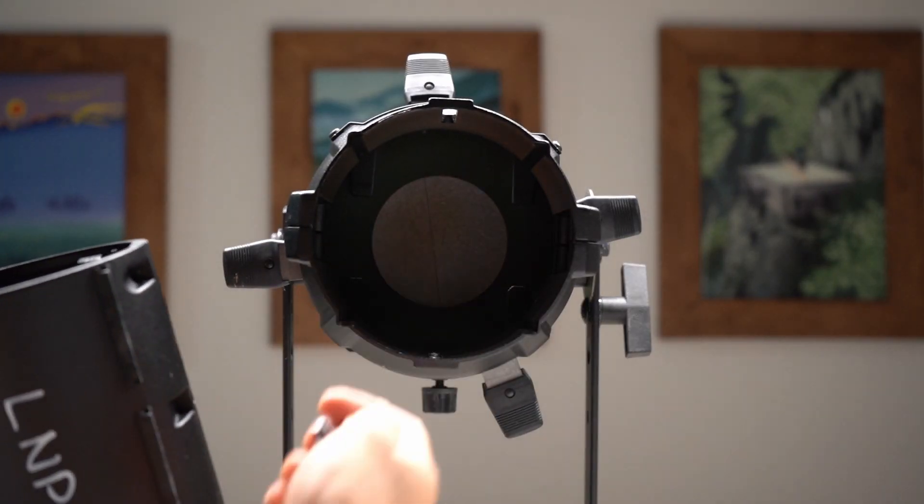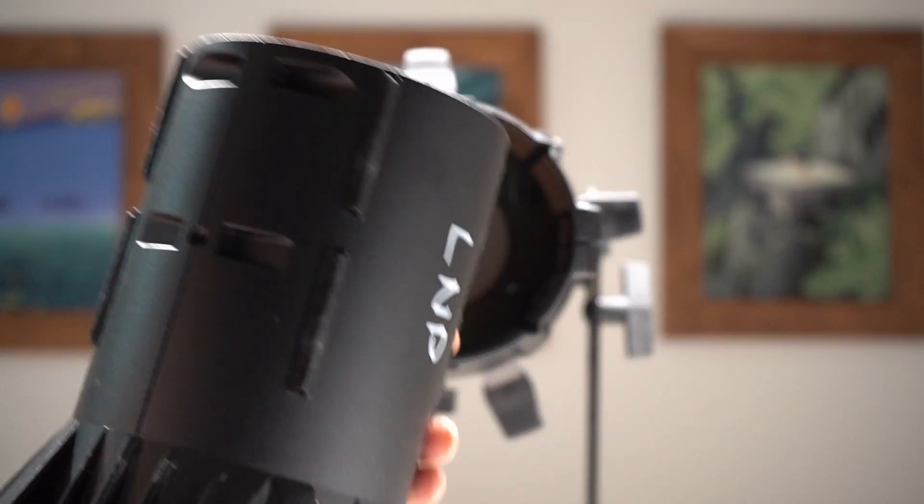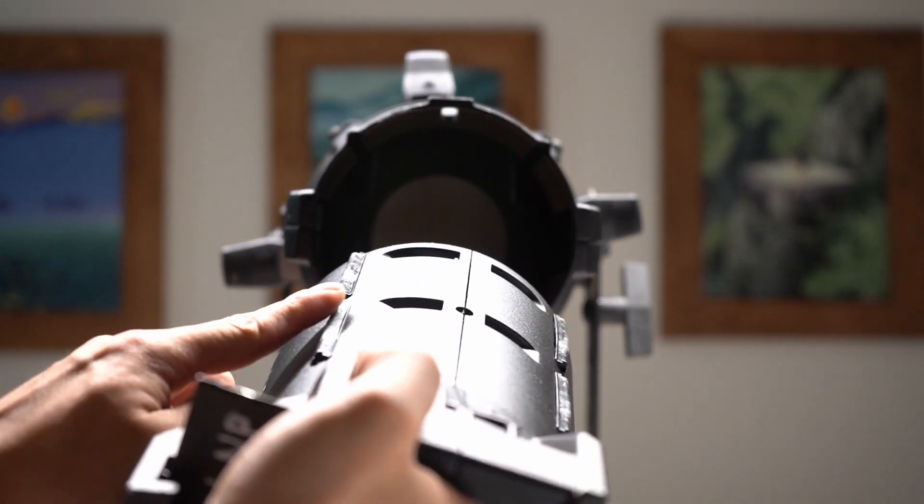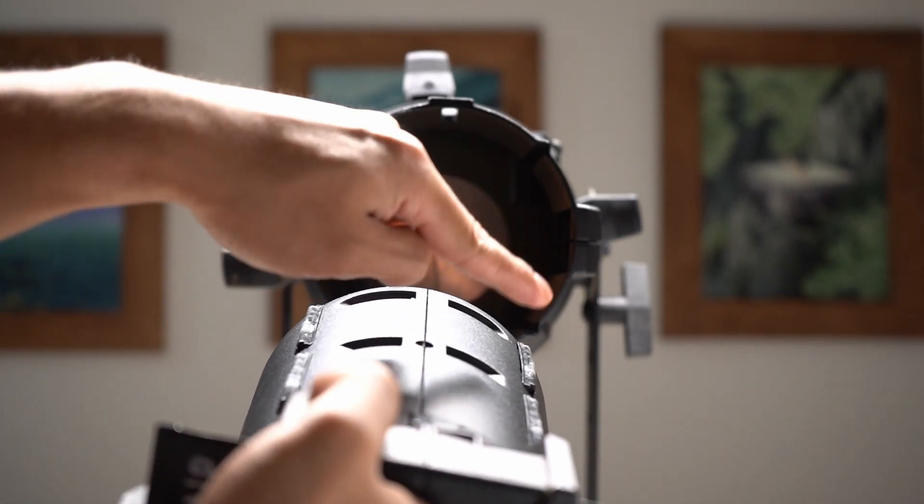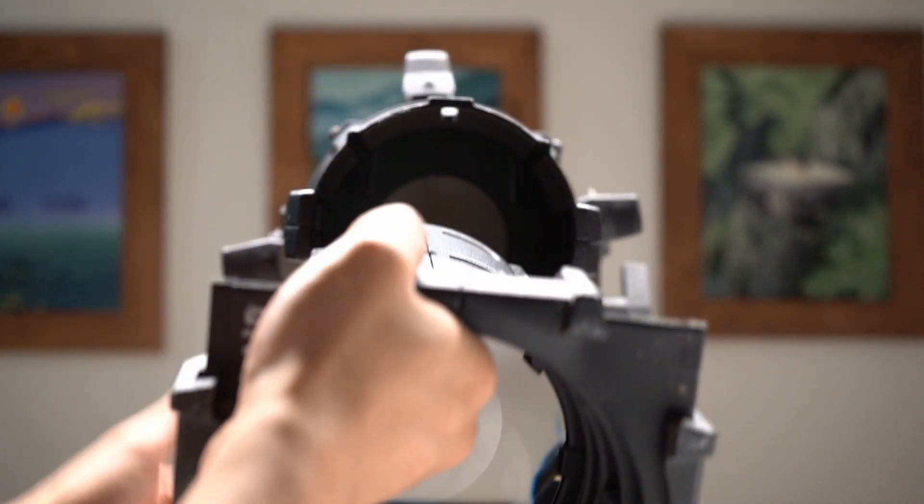In order to put in the lens barrel, you want to line up the grooves of the lens and the Leko barrel. The lens barrel decides the spread of the light. The lower the number, the more narrow the beam. The larger the number, the wider the beam.